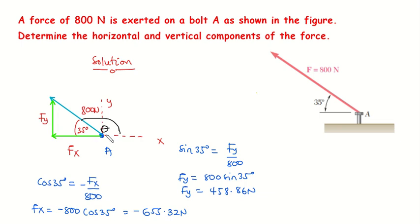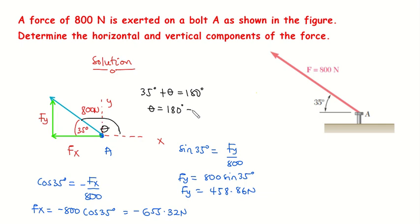The sum of angles on a straight line gives us 180 degrees. So we have 35 degrees plus theta equal to 180 degrees. Therefore, theta equals 180 degrees minus 35 degrees, which gives us a value of 145 degrees. We'll use this value in place of the 35 degrees.